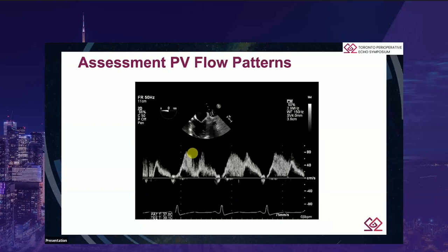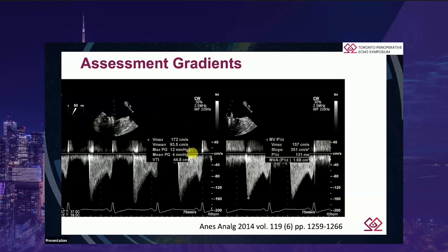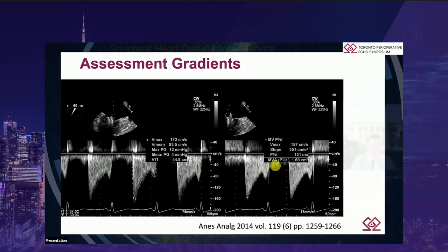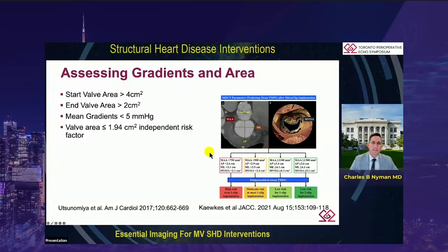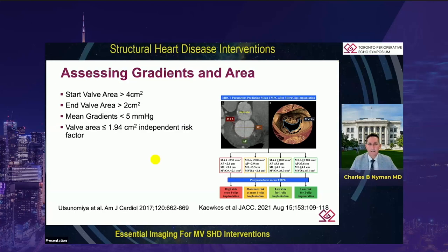Pulmonary vein flow patterns — we're all happy when we see normalization, but it's not always the case. For gradients, you can measure through either orifice, but don't use pressure half-time to measure mitral valve area — it has not been validated in these patients. In deciding whether to add an extra clip, take into account your entire patient situation. For a multi-clip strategy, ideally start with a mitral valve area greater than 6; for a single or possible multi-clip strategy, certainly over 4. Definitely leave your patients with a valve area over 2 — a valve area less than 1.9 is an independent risk factor for worse outcomes. Aim for a mean gradient less than 5, targeting mild or less MR.